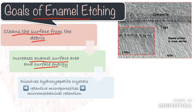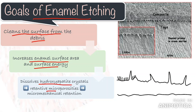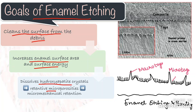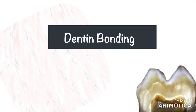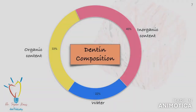One very important use of etching is to partially dissolve the hydroxyapatite crystals to create retentive micro-porosities, into which the bonding agent can infiltrate and form retentive resin tags. This is where the whole concept of micromechanical retention comes from. The acid etch technique has revolutionized the practice of restorative dentistry.